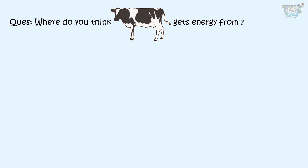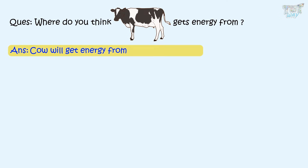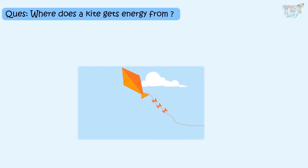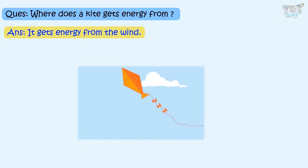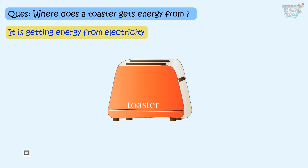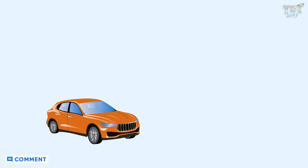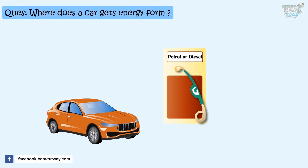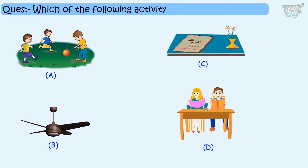Now let's answer some questions. Where do you think the cow gets energy from? The cow gets energy from the food she eats. A kite flies high in the sky — where is it getting energy from? It gets energy from the wind. A toaster — where does it get energy from? It gets energy from electrical energy. This is a car — what is its source of energy? Fuel! Yes, fuel is the energy source for cars.